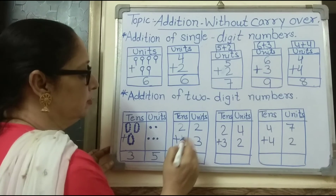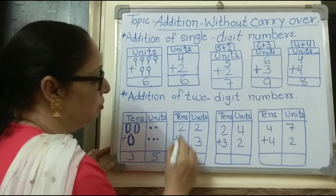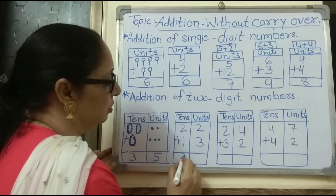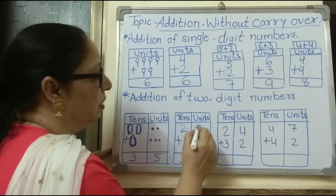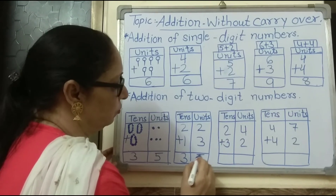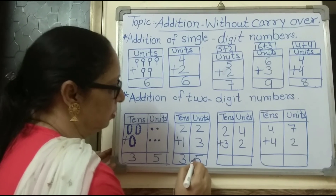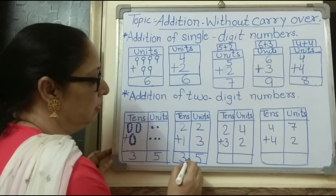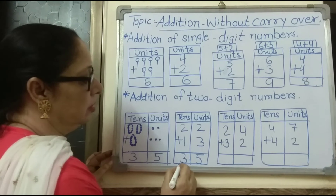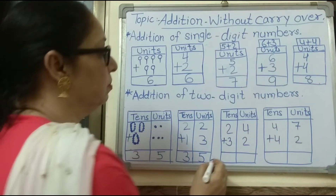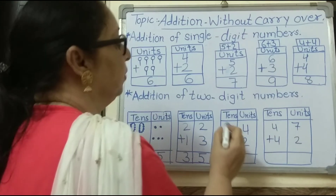Two plus one is three for the tens column, and two plus three is five for the units column. The number is thirty-five. Three tens and five units — that is the answer, thirty-five.